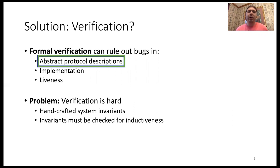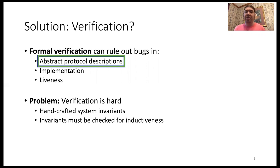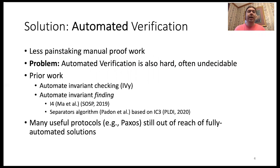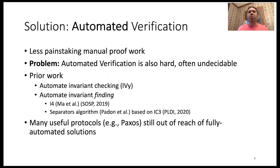The problem with that is that verification is a painstaking process. It often involves crafting these difficult system invariants, proving the invariants correct, and so on. Our solution is going to be more automated verification — we want to have the human do less painstaking manual proof work and offload that work to the computer instead.